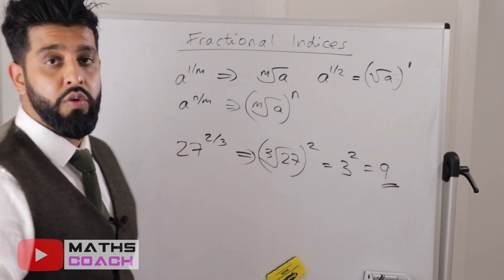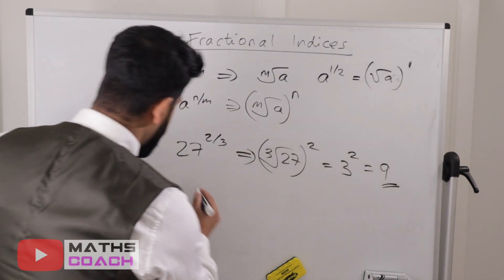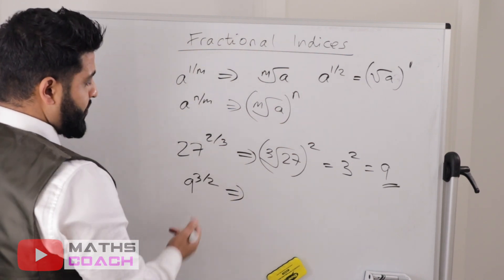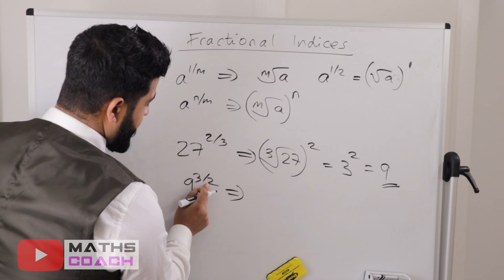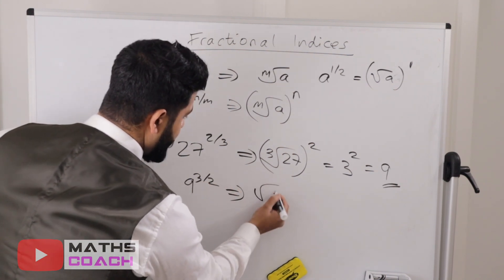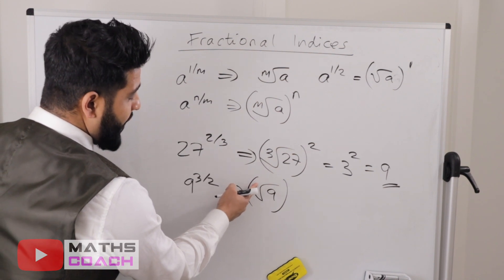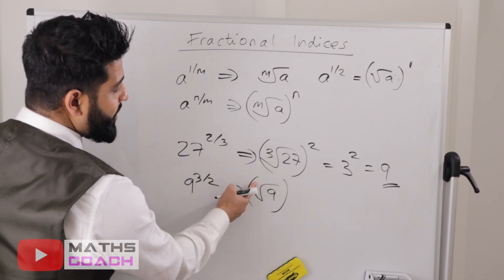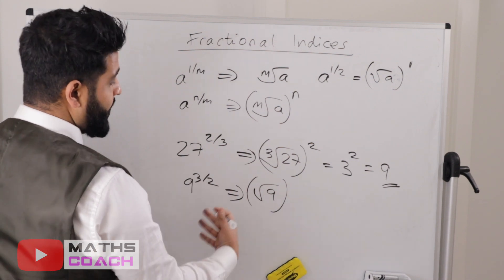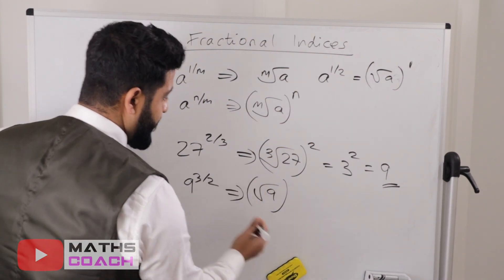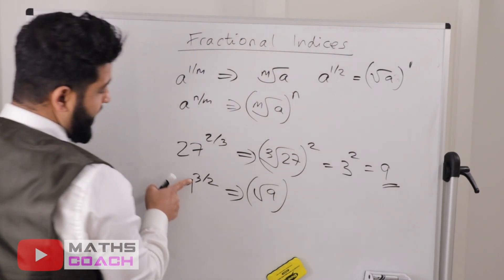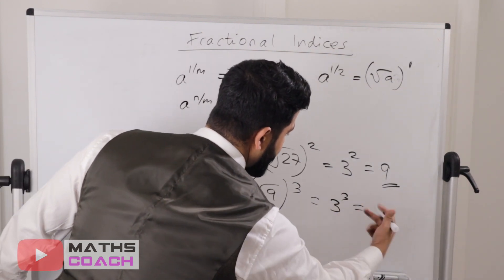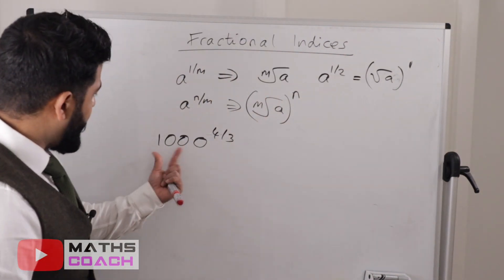Let's try 9 to the power of 3 over 2. The denominator is 2 so we square root it. Square root of 9 is 3, then 3 to the power of 3 equals 3 times 3 times 3, which is 27. For 1000 to the power of 4 over 3: cube root of 1000 is 10, and 10 to the power of 4 is 10 times 10 times 10 times 10, which is 10,000.